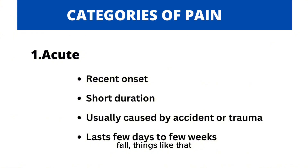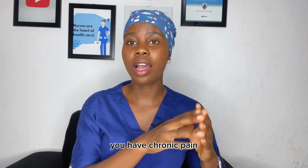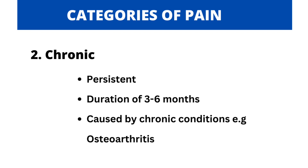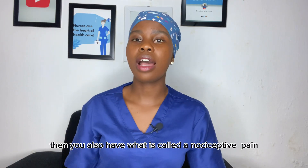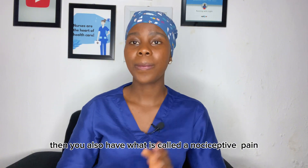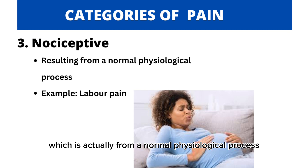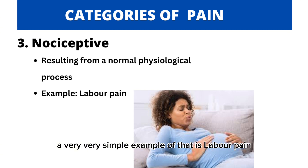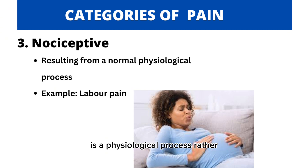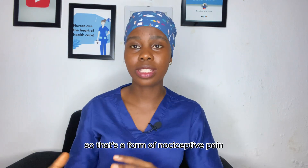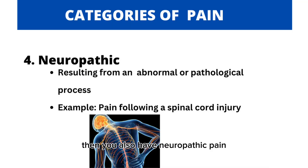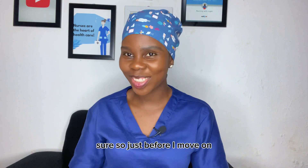There are different categories of pain. You have acute pain — recent onset, probably from trauma, injury, an accident, or a fall, and of short duration. You have chronic pain, which is persistent and could be from conditions like osteoarthritis. Then you also have nociceptive pain, which comes from a normal physiological process that produces pain — a simple example is labor pain, which is physiological but very painful. And you also have neuropathic pain, which occurs from abnormal processes or a pathological condition in the body.